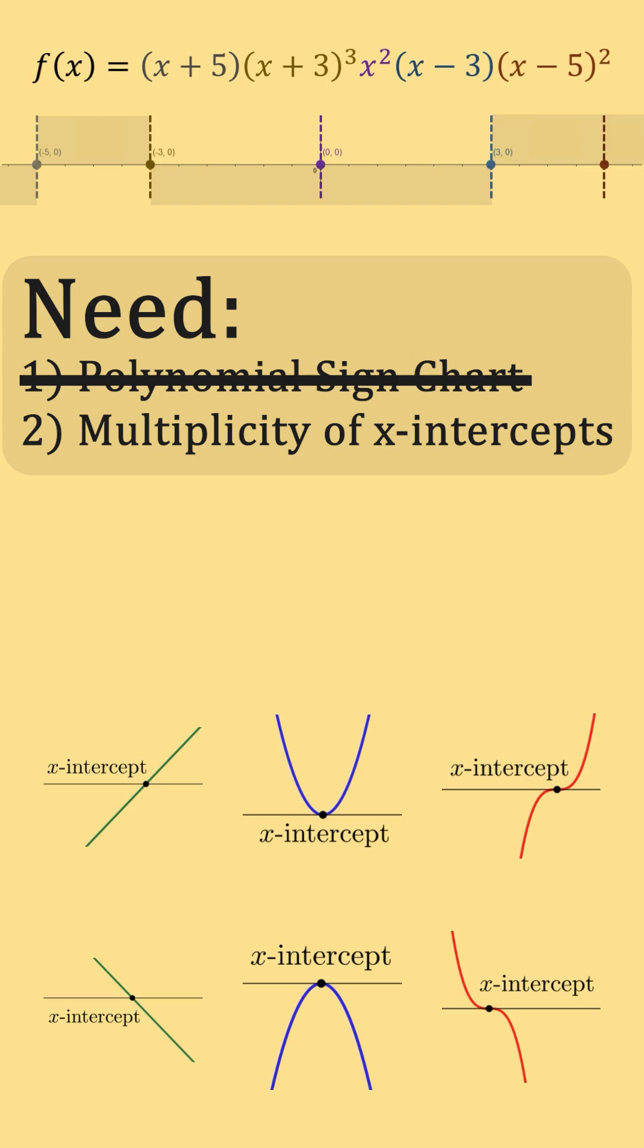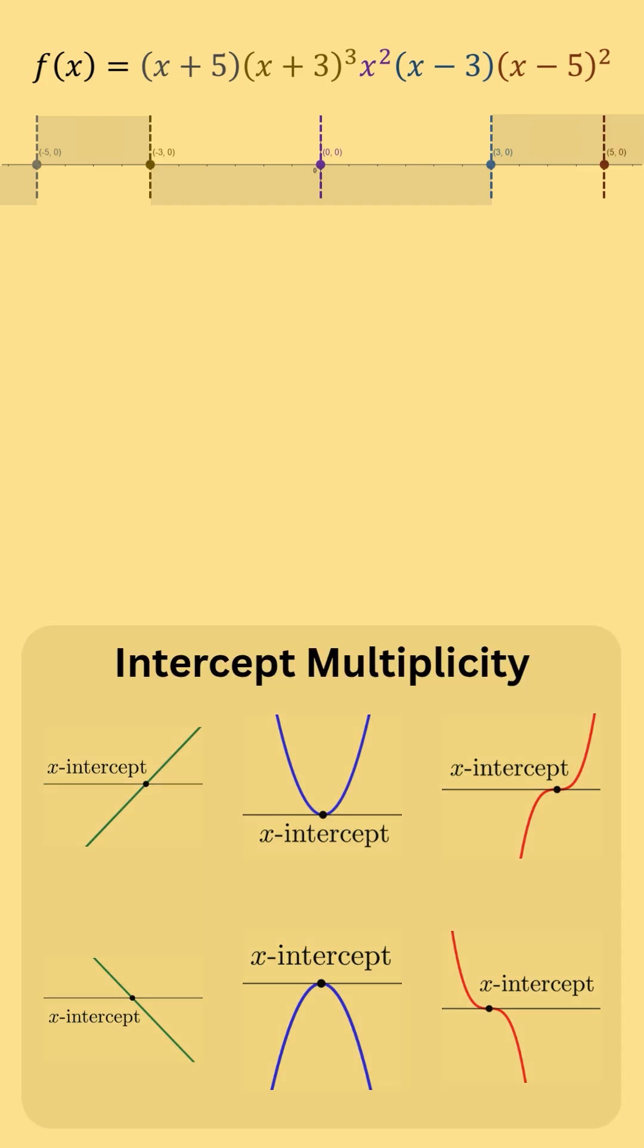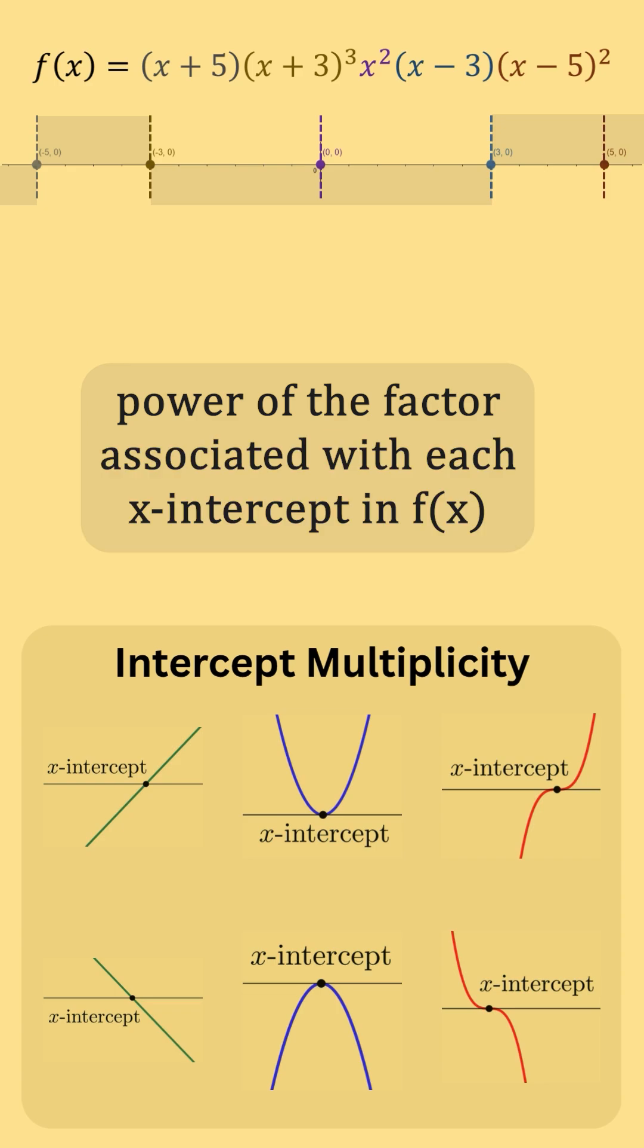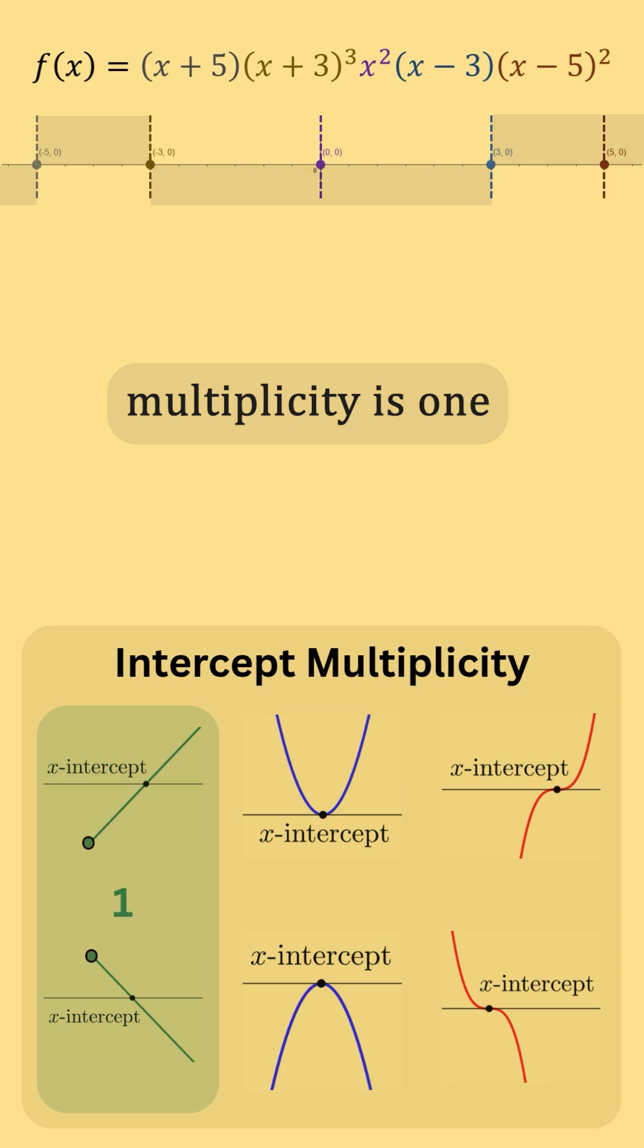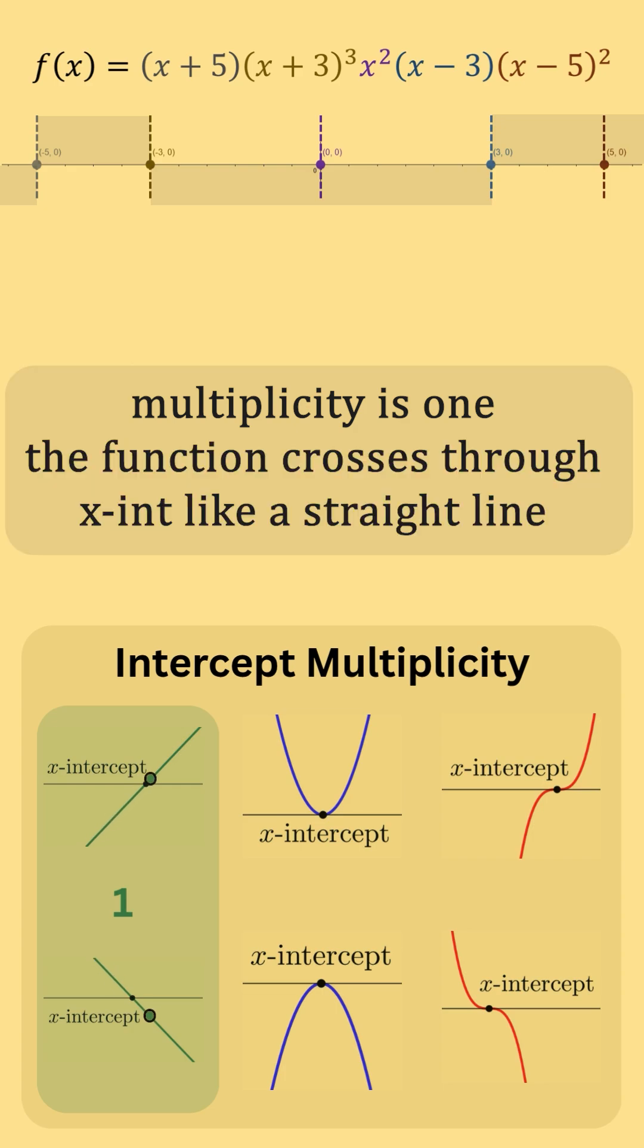The polynomial sign chart is done. The multiplicity for each x-intercept is the power of the factor associated with each x-intercept in f(x). If the multiplicity is 1, then our function crosses the x-intercept as a straight line.